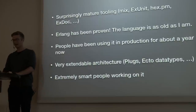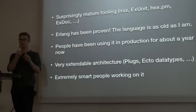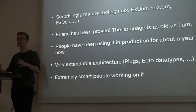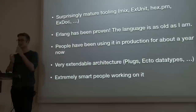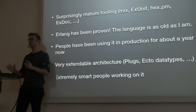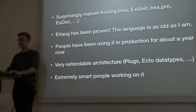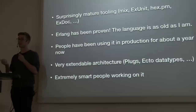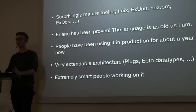Even if there's something missing, the architecture of Elixir, Phoenix, and Ecto has been written in a way that it's super easy to extend to your needs. Even if something doesn't quite work yet, it's super easy to work around it. And last but not least, there are extremely smart people in the community. If you go to a Ruby channel looking for help, the quality of answers is very mixed. The help I got with my Phoenix problems was spot on, right away.